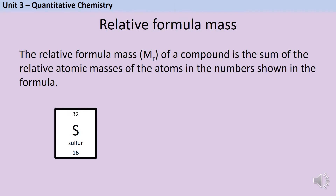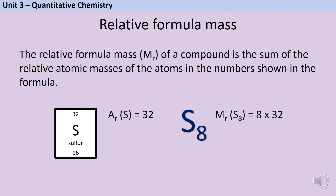For instance, if I look at the periodic table, sulphur has a relative atomic mass of 32. But sulphur most commonly exists as a molecule that contains eight sulphur atoms. So if I wanted to know how heavy one mole of those sulphur molecules would be, I could do 32 × 8, which gives me a relative formula mass of 256.